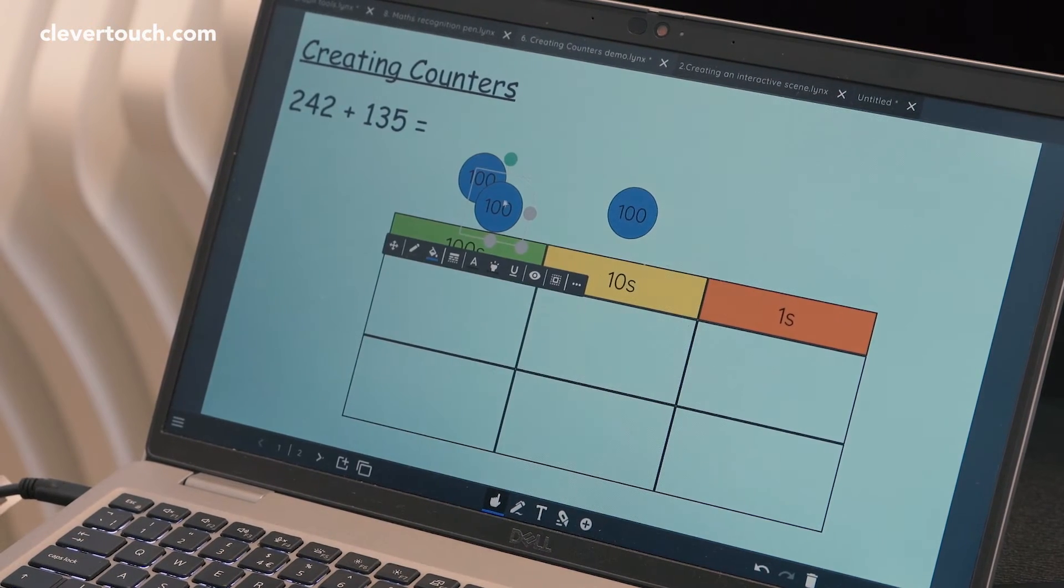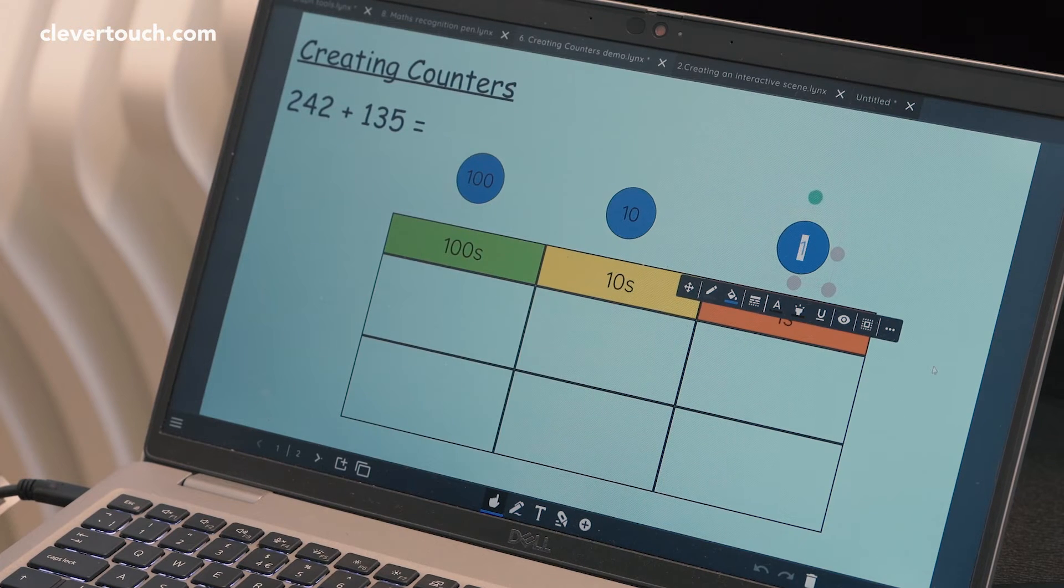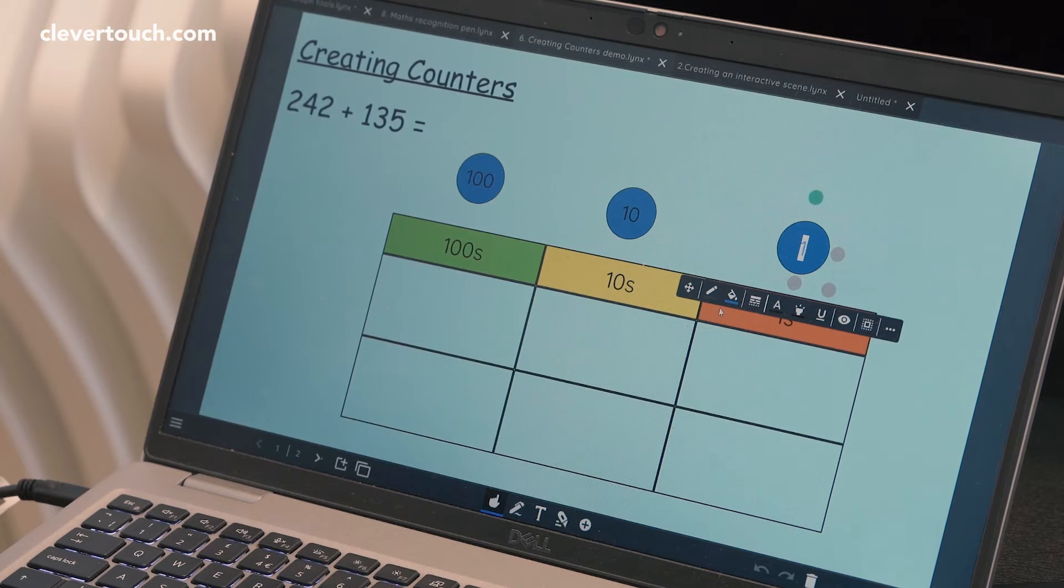And again for my other one. This time in here this is going to be my tens counter, and this one will be my ones counter there as well. I'm going to match them up to the same color that I've got here just below.